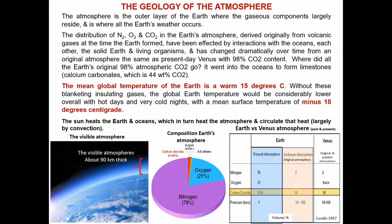The mean global temperature of the Earth is a warm 15 degrees. Without these blanketing insulating gases, the global Earth temperature would be considerably lower overall, with hot days and very cold nights, with a mean surface temperature of minus 18 degrees centigrade.